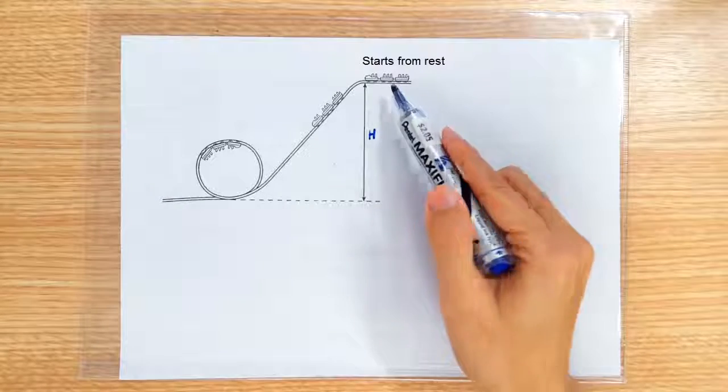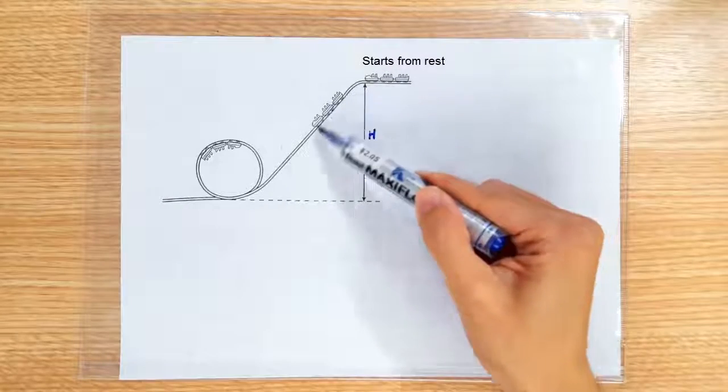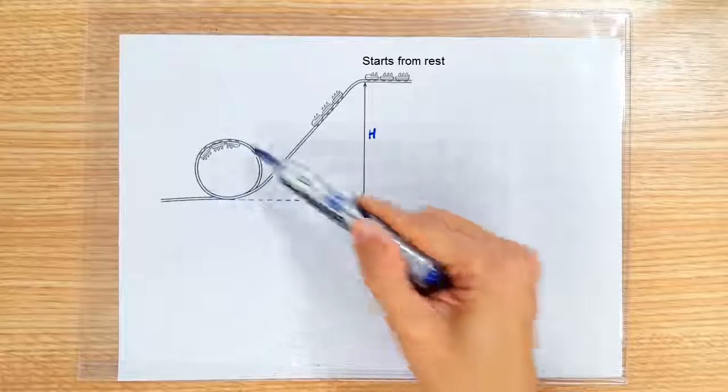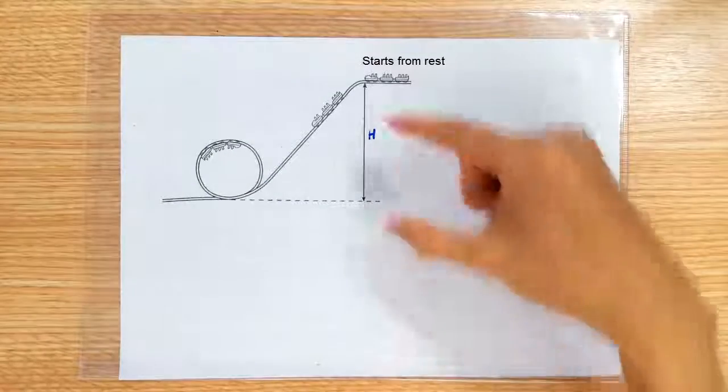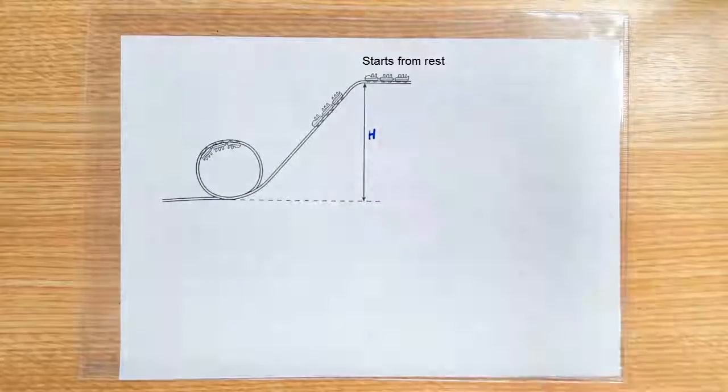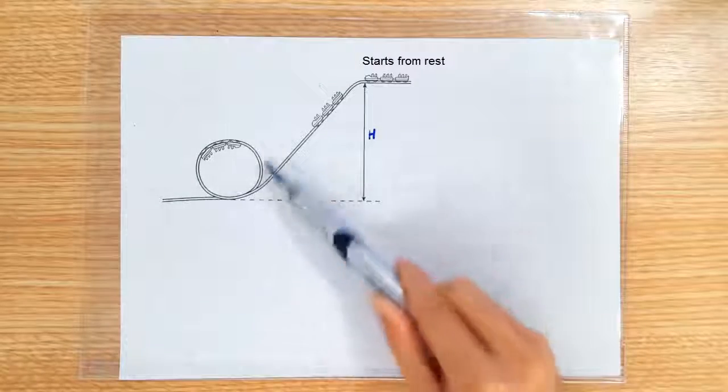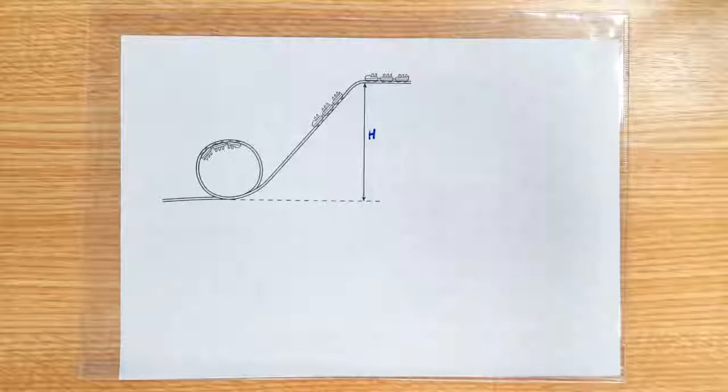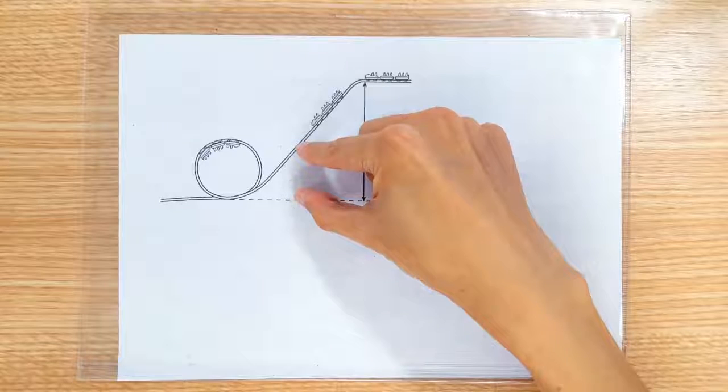So we have a roller coaster racing down the ramp and then it does the loop. How tall must this thing be such that the roller coaster can do the loop successfully? Now the answer cannot be this because if...